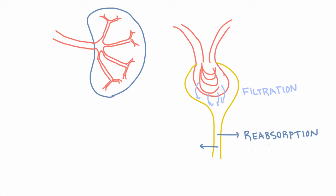And the rest, everything it did not reabsorb is basically urine and is going to eventually make its way to the bladder and get peed out. Now in this section, we're going to focus on this first step, filtration, and get a better sense for how it works.